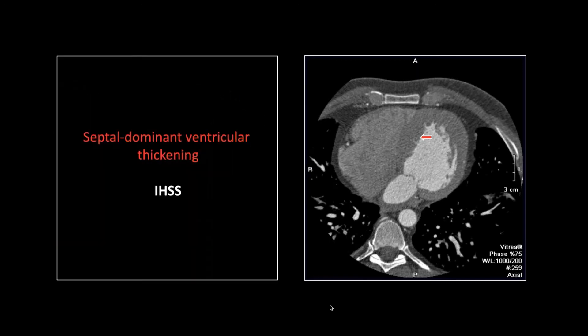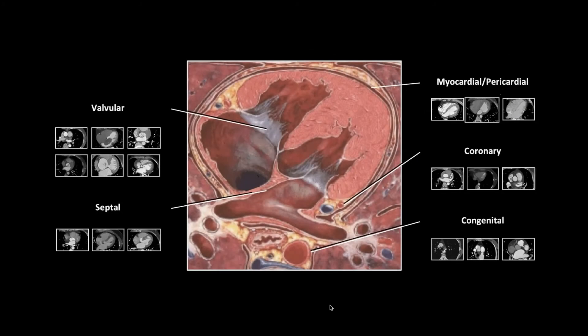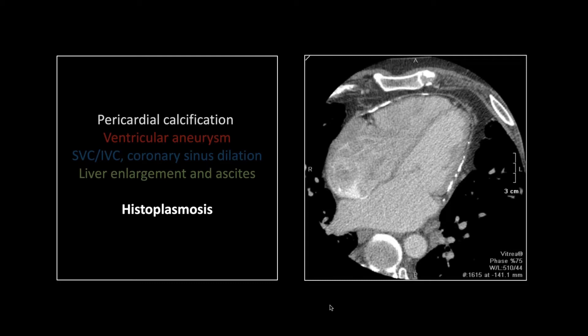So that is IHSS. Our last one is a pericardial case, and this is a classic. The secondary findings and physiologic manifestations are such that I absolutely had to show it. There is pericardial calcification, and based on that most everyone already knows this is going to be a case of histoplasmosis. We're dealing with restrictive pericarditis — the ventricles are definitely compressed.